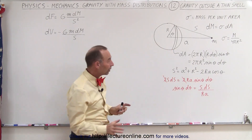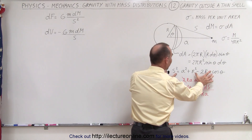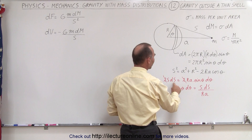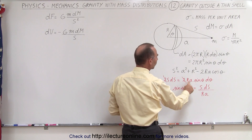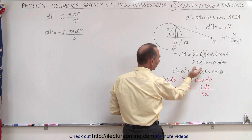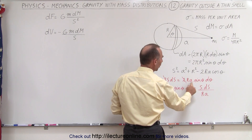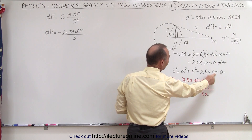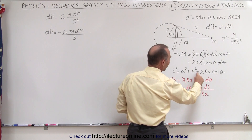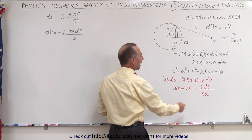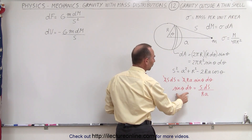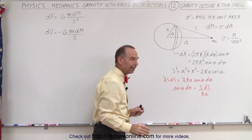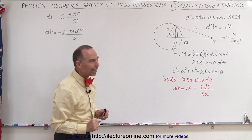We take the derivative of both sides with respect to θ. This gives 2s ds = 2ra sinθ dθ, since a and r are constants — the derivative of cosine is negative sine, taking care of the negative sign. Solving for sinθ dθ, we get sinθ dθ = s ds / (ra), which will come in handy later.